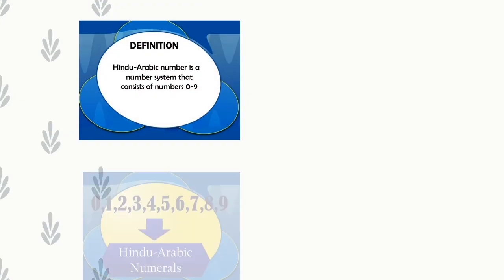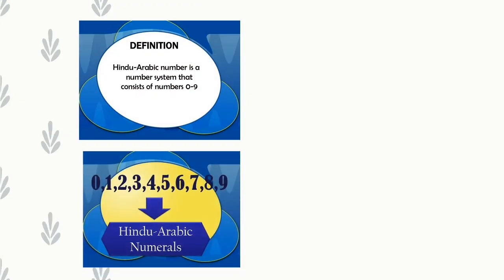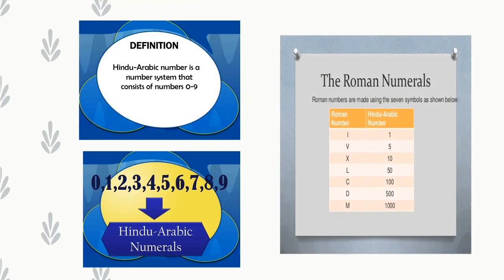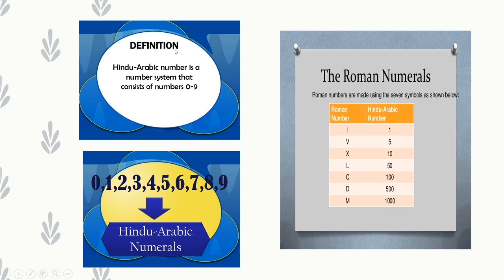Hindu Arabic numerals and Roman numerals. Hindu Arabic numerals is the number system consisting of digits 0 to 9. Every number is formed using the digits 0, 1, 2, 3, 4, 5, 6, 7, 8, 9 — all 10 digits are used to form Hindu Arabic numerals.